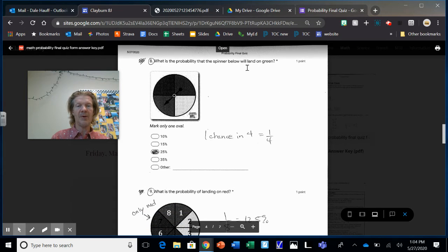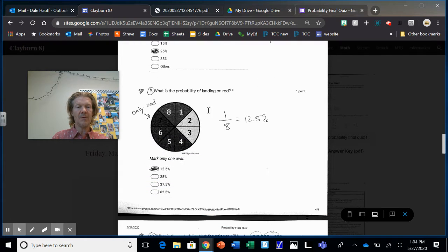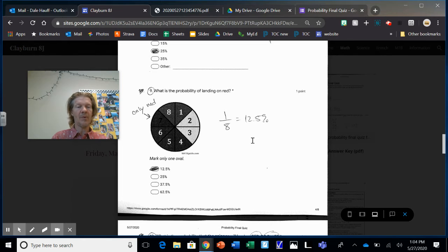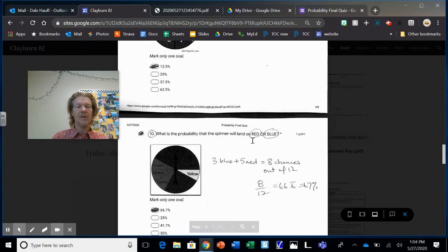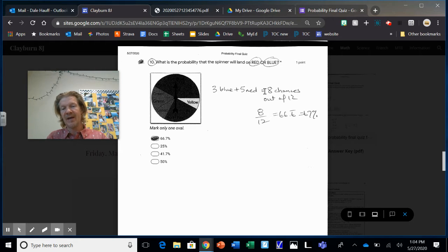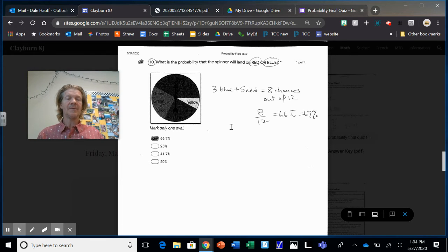Number eight, super easy. What's the probability of green? One out of four, 25%. What's the probability of red? There's only one red, eight slices of pie. One out of eight, 12.5%. Number 10, probability of red or blue. So either one, not red and blue, but red or blue. So three blue and five red. So there's eight different chances of getting what you want out of a possible 12. So it'd be 66.6 repeating or 66.7 or 67%, depending on how you want it. There's lots of good ways to round those numbers.